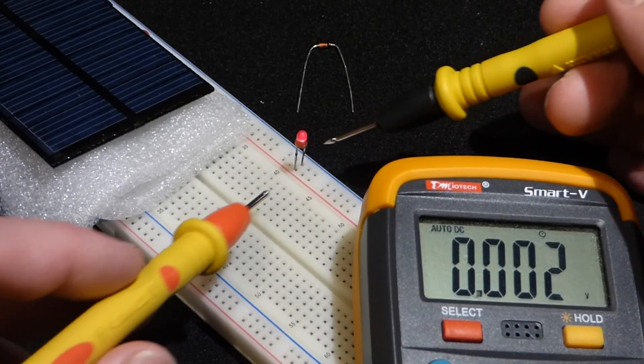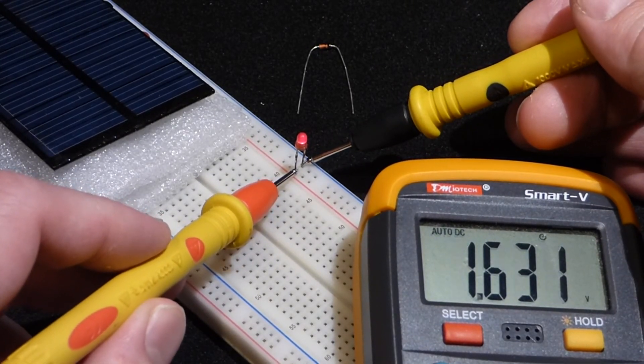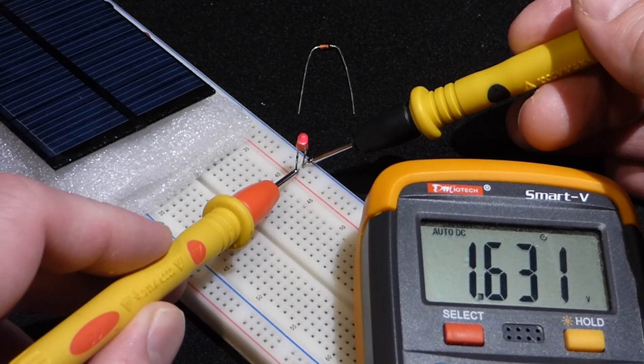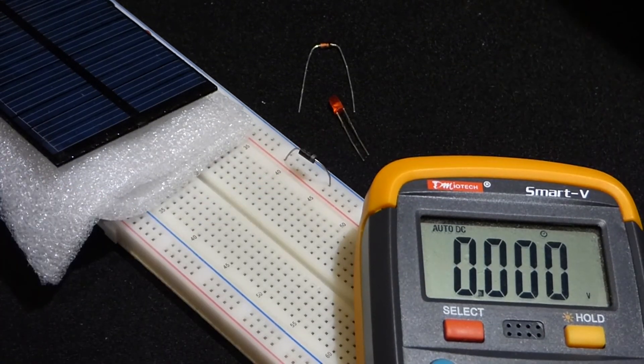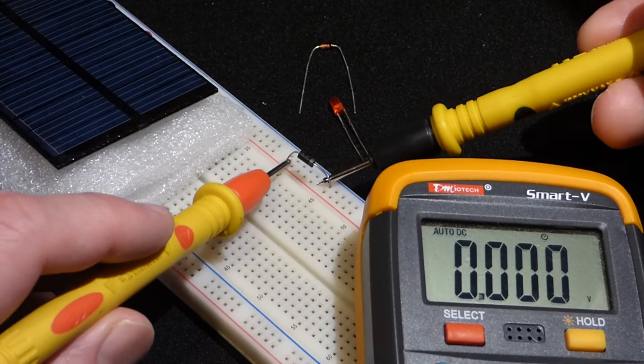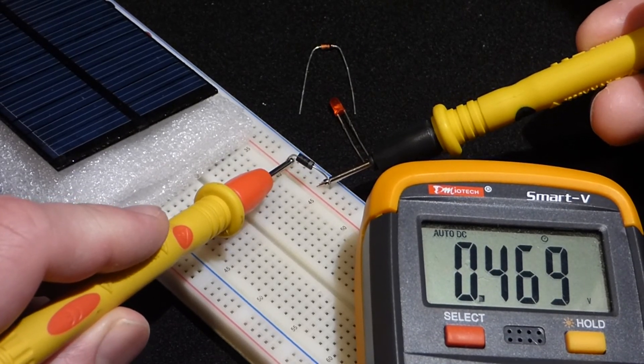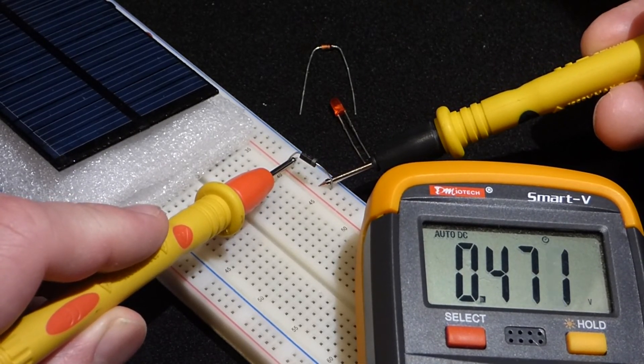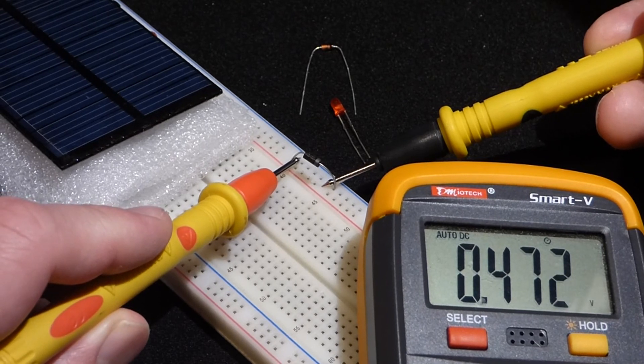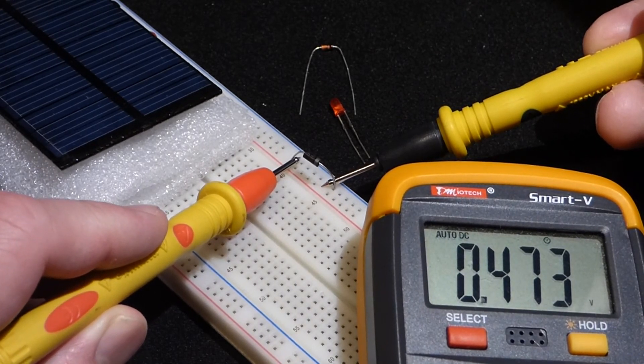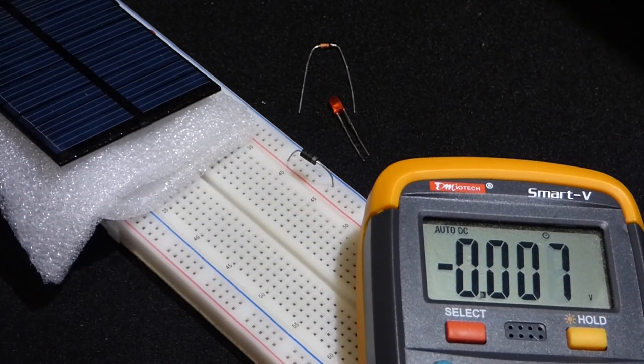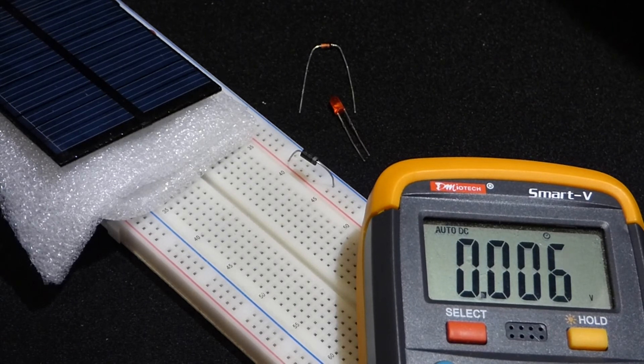So now you compare that to the LED, which drops about 1.6 volts. And the rectifier, which you can see is blocking about 0.47 volts. So it looks like the rectifier diode also, and the LED, was also blocking less voltage when it wasn't passing as much current.